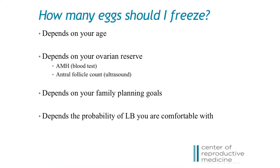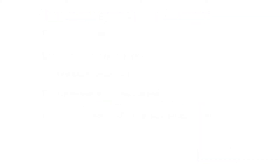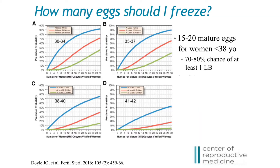What is the ideal number of eggs to retrieve? The ideal number is really dependent on many factors: the woman's age, her ovarian reserve, the number of children she would like to have, and the likelihood of live birth she's comfortable with achieving. While more and more women are pursuing egg freezing, there still hasn't been enough time for a significant proportion of these women to come back, thaw their eggs, and attempt to have children to provide better estimates of success rates at various ages, particularly in older women. There are a few studies reporting prediction models that can provide some guidance on the chance of having a live birth based on the woman's age at the time of egg retrieval and the number of mature eggs retrieved.